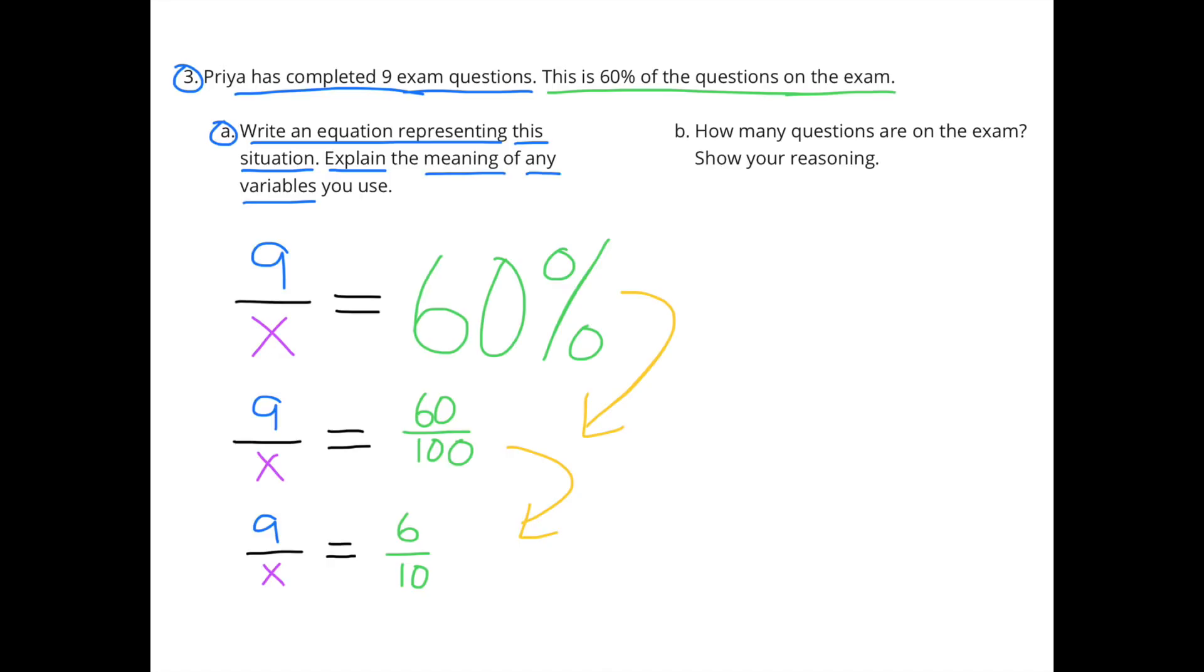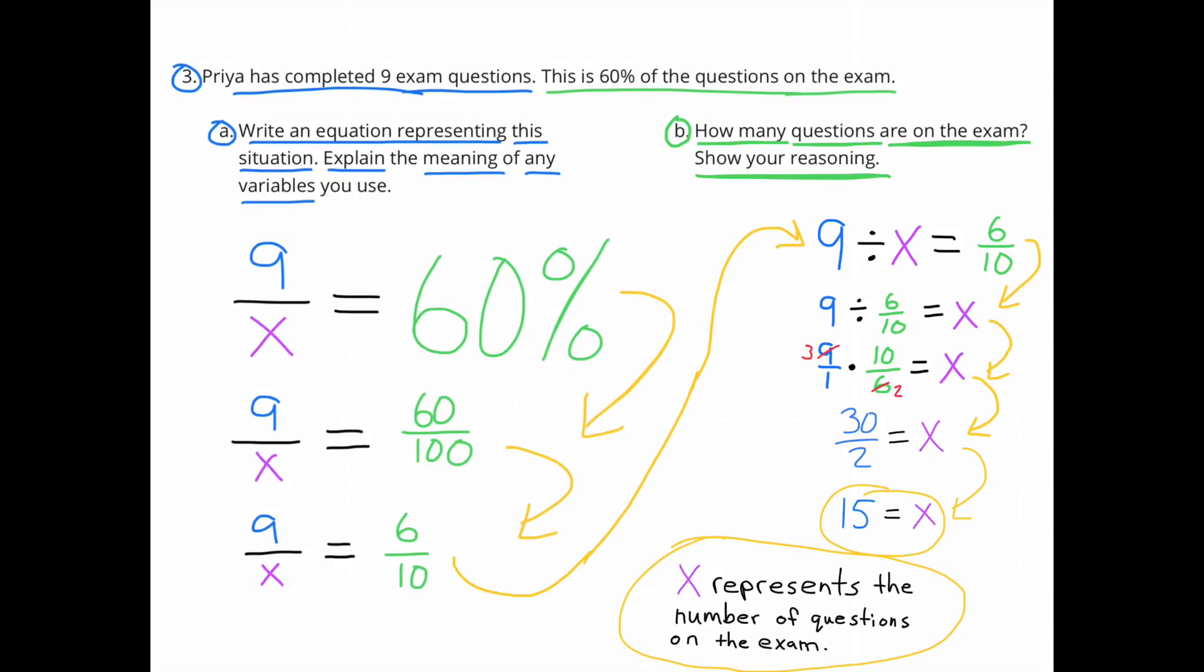Here's another way to look at it: 9 questions completed divided by X questions equals 60%, which can be rewritten as 60 out of 100. So 9 over X equals 60 over 100, which is 9 over X equals 6 tenths. 9 over X means 9 divided by X. So 9 divided by X equals 6 tenths, which can be rewritten as 9 divided by 6 tenths equals X. 9 divided by 6 tenths can be done by multiplying by the reciprocal, which is 10 sixths. So 9 times 10 sixths equals X, which equals 30 halves, or 15. And again, X equals 15, representing the number of questions on the exam.